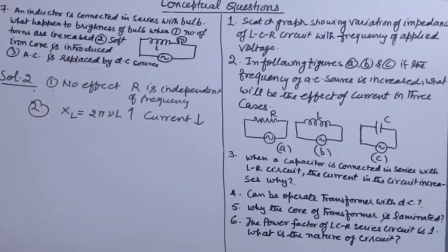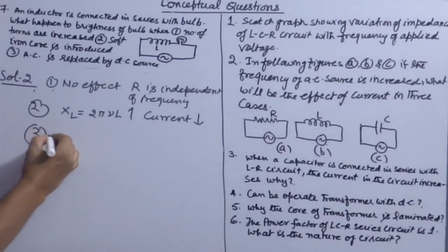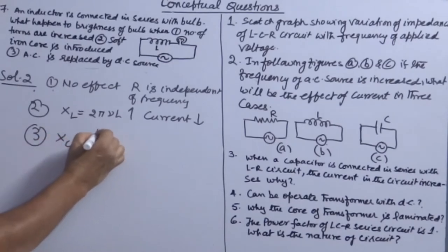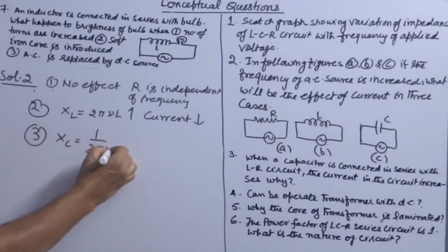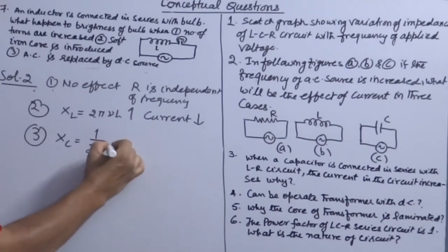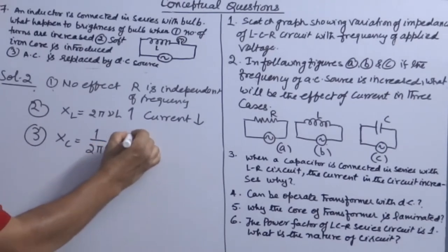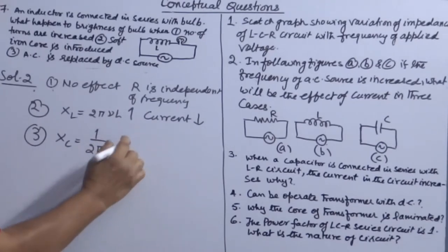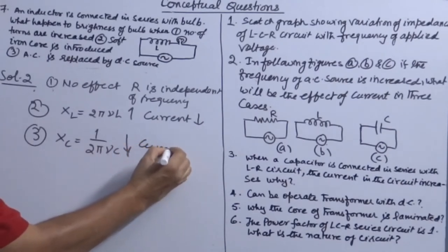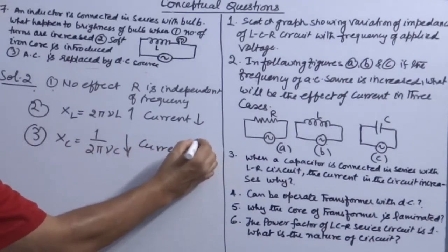XL measures resistance, so when resistance is increasing, current will decrease. In the third case, XC is equal to 1 over 2π νC, so when frequency increases, XC decreases and current will increase.